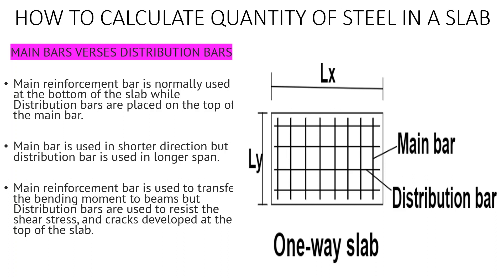In a slab we have the main bars and the distribution bars. Looking at this diagram, the main bars are the ones running vertically along the longer span, and the distribution bars are the ones running horizontally along the shorter span.